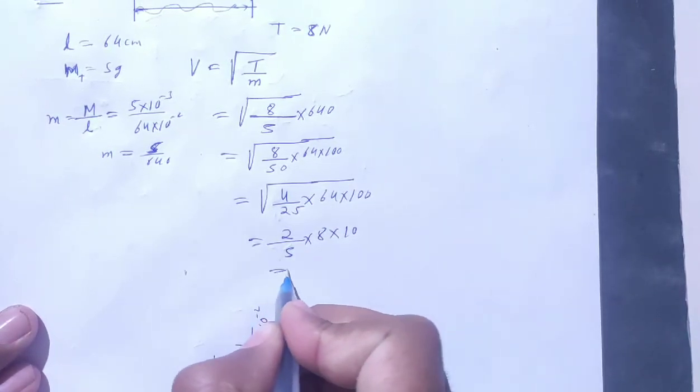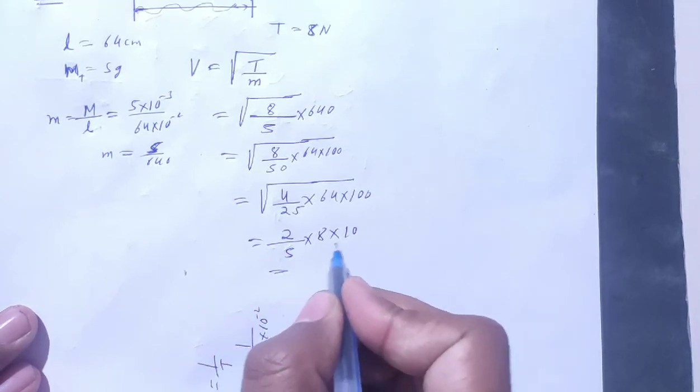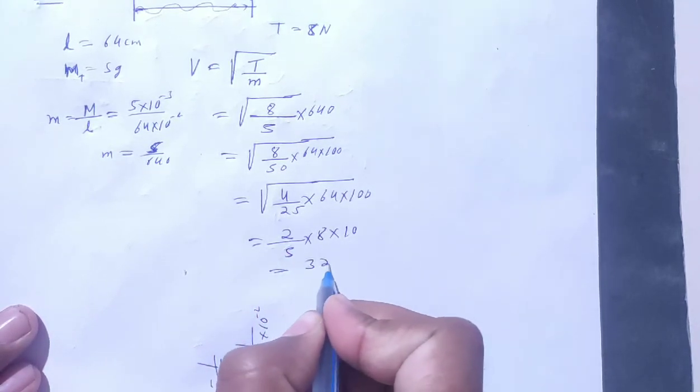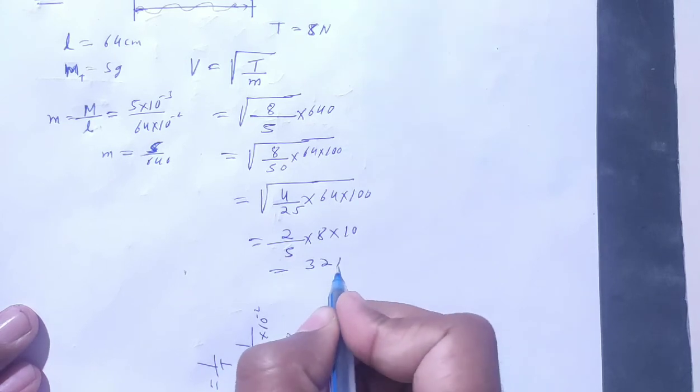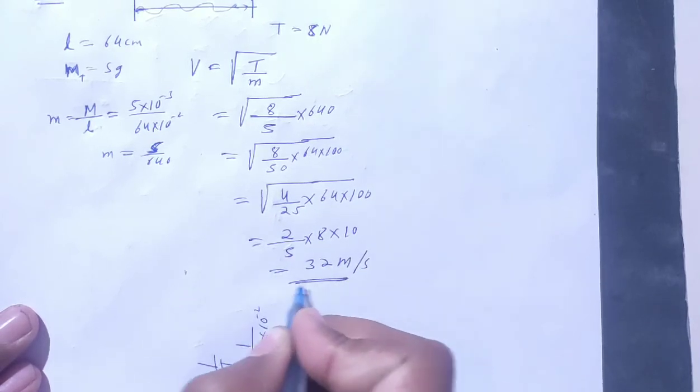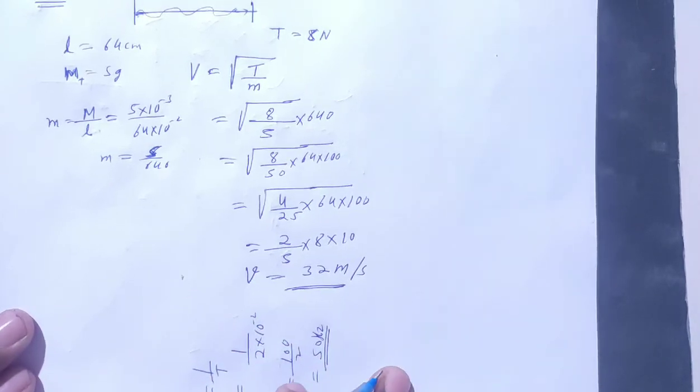How much is it? This is 16 by 5, it is 3.2, 3.2 into 10, it is 32. How much is it? Meter per second. Speed what is it? 32 meter per second.